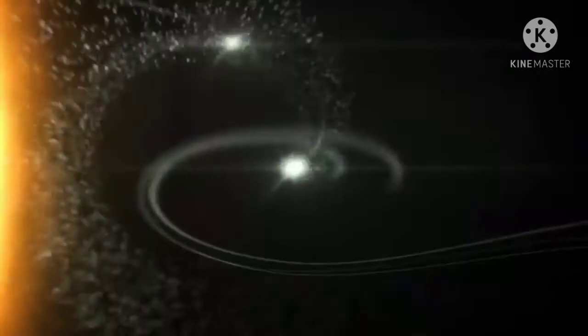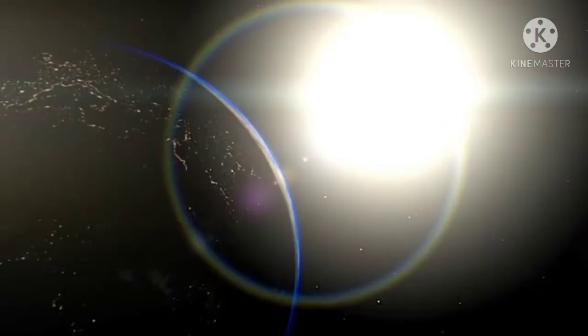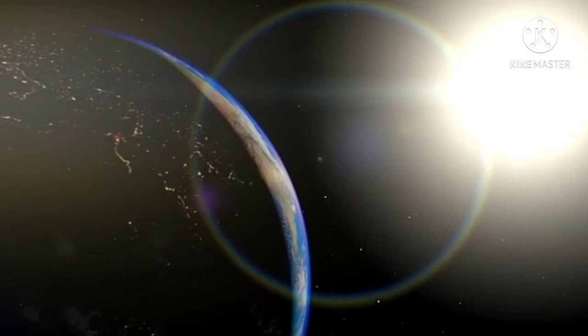Could a black hole destroy Earth? Black holes do not go around in space eating stars, moons, and planets. Earth will not fall into a black hole because no black hole is close enough to the solar system for Earth to do that.